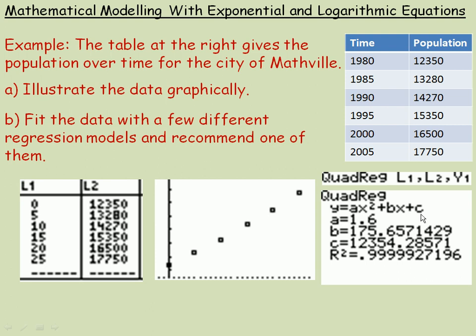It'll tell you the quadratic equation y equals ax squared plus bx plus c and tell you what all the coefficients are. So a is 1.6, that would be 1.6 x squared. The amount or population over time would be 1.6 times the time squared. The b number is 175.6, so it rounds to 176. I round to the nearest integer. And then the constant on the end is 12,354.28. So to the nearest whole number, it's 12,354.